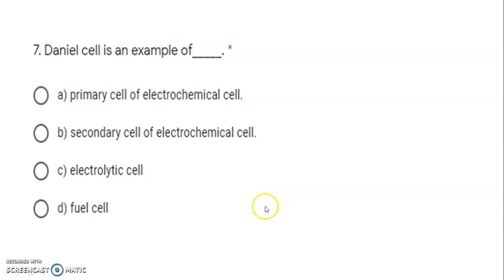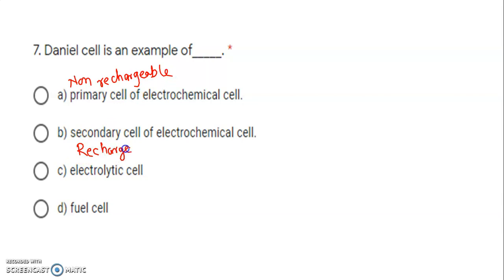Next: Daniel cell is an example of what? There are two types of cells — primary cells and secondary cells. Primary cells are non-rechargeable; secondary cells are rechargeable and can be used again and again. Daniel cell is a primary cell because it is non-rechargeable. Once all the electrolyte is exhausted, the Daniel cell stops working. So it is a primary electrochemical cell.